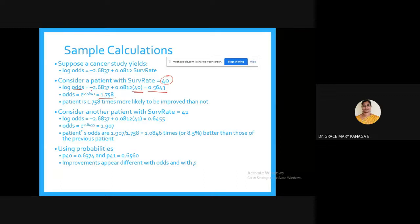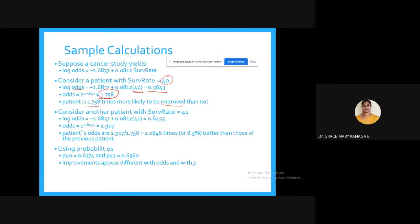This means the patient is 1.758 times more likely to be improved than not improved. The odds value gives the number of times more likely the patient is to be improved.